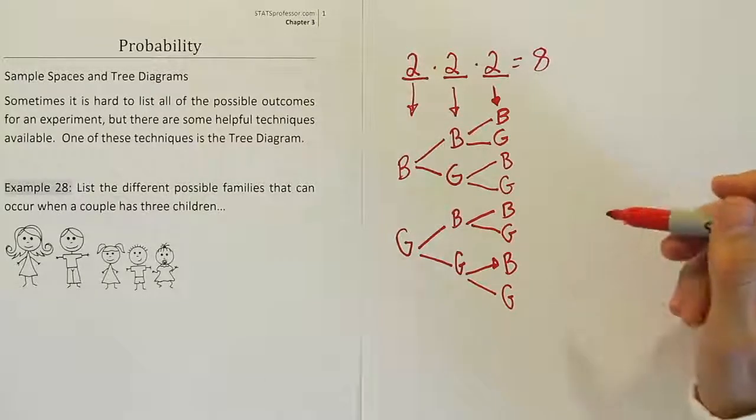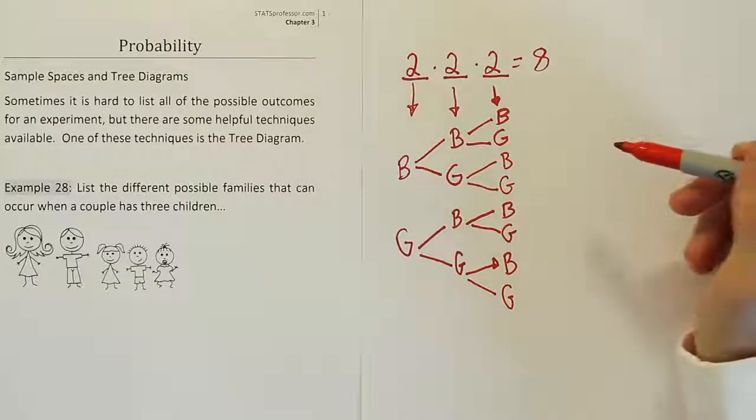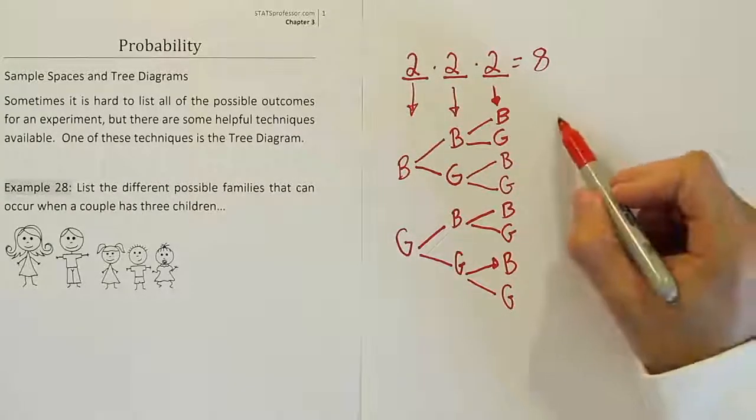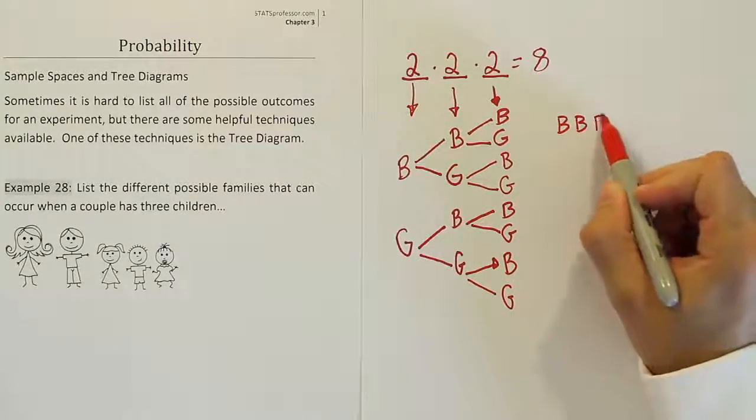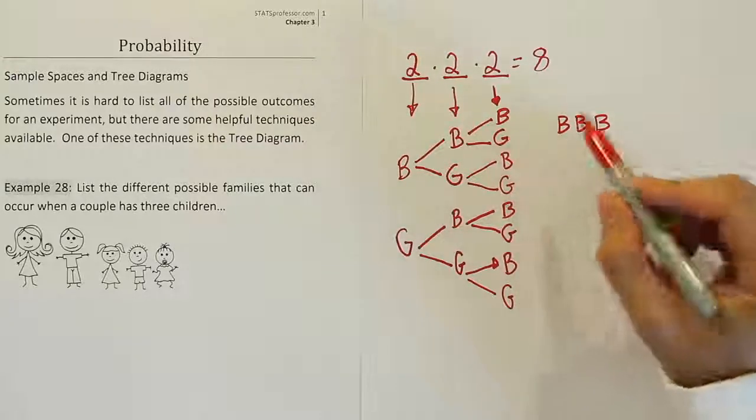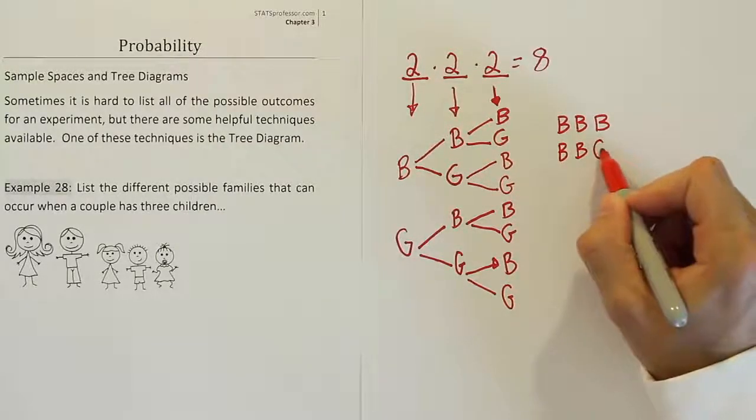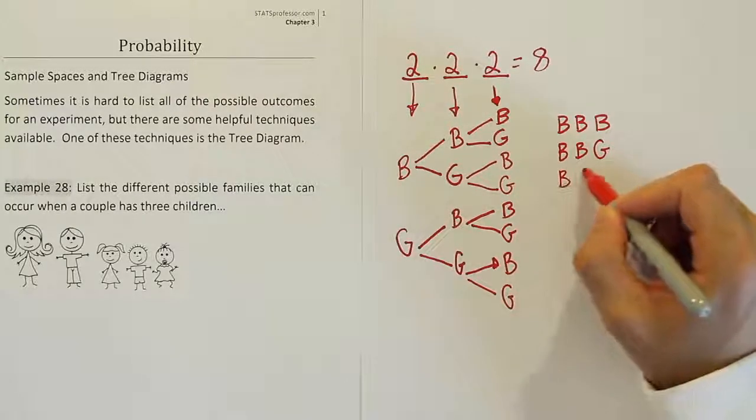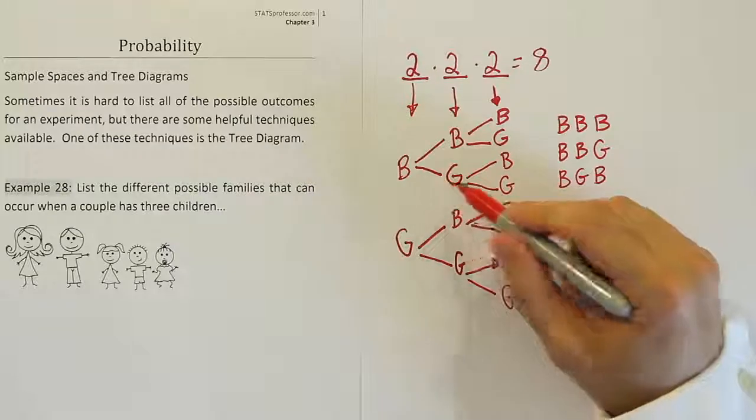And the way we finish the list then is to go through this and just trace back what we found. So it could be boy, boy, boy as my birth, or it could be boy, boy, girl, or it could be boy, girl, boy, or boy, girl, girl.